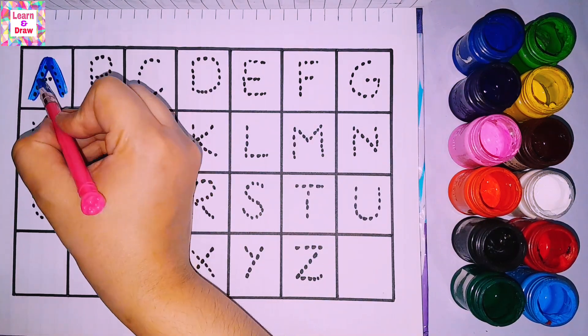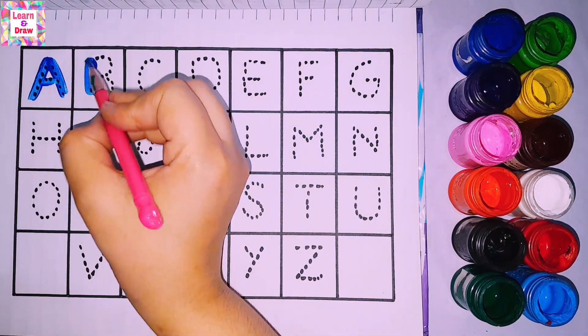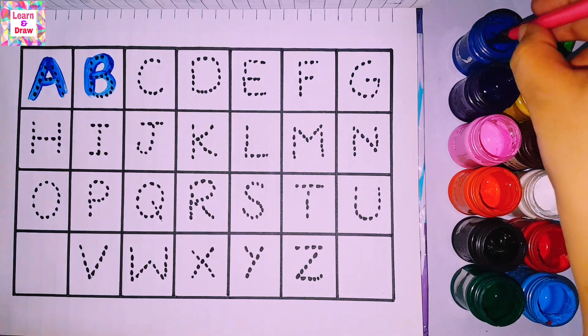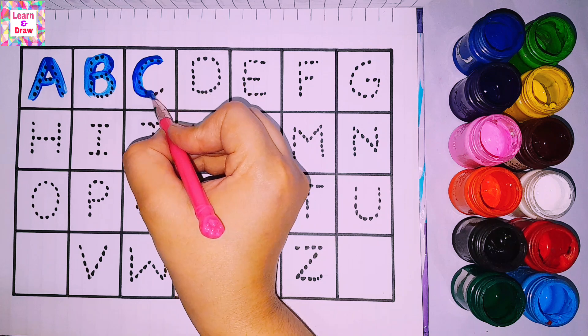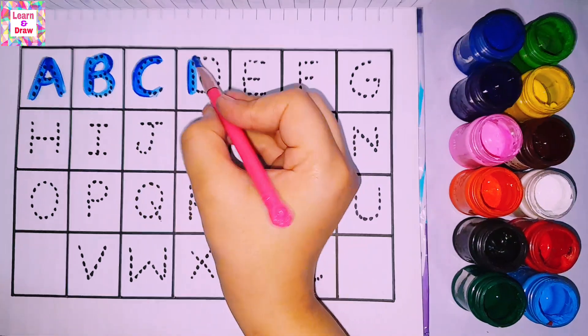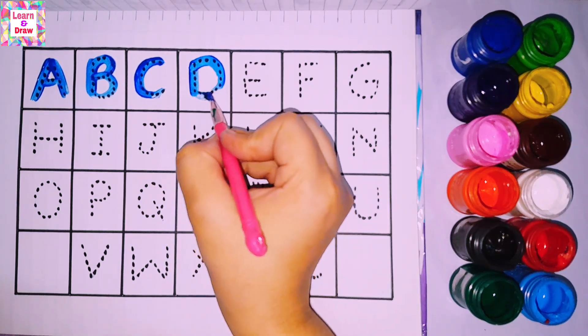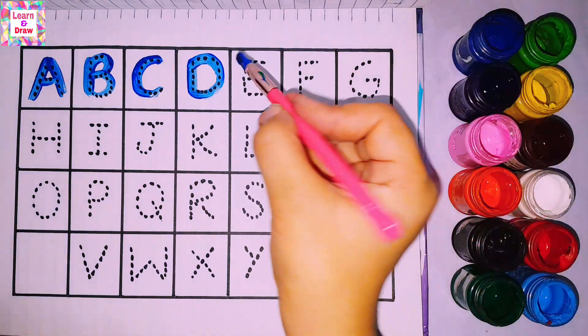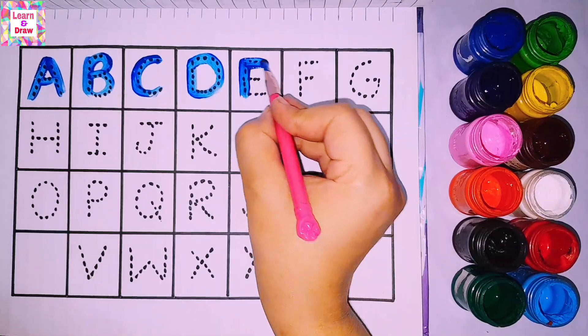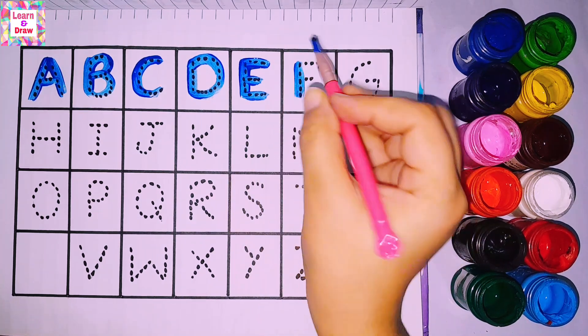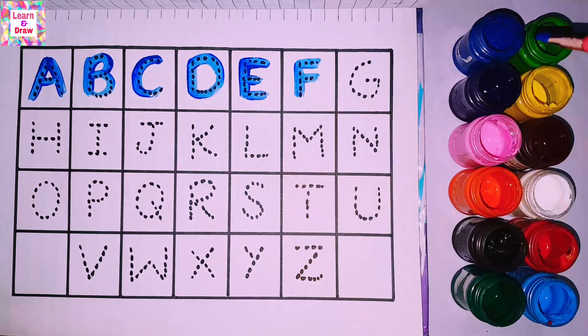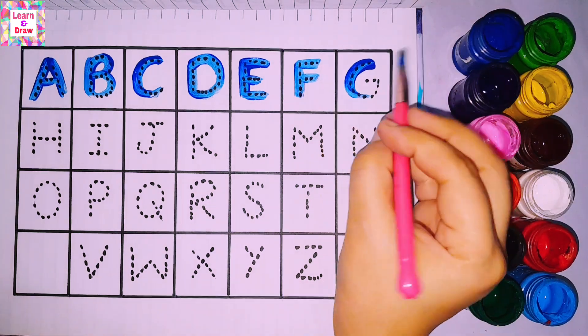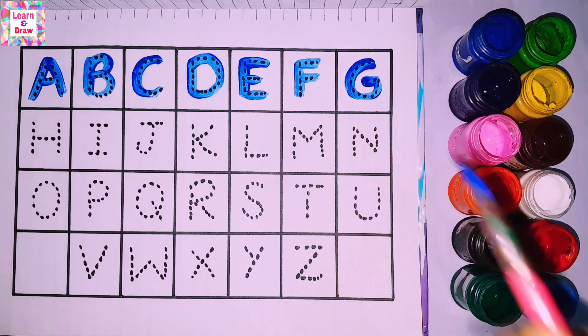A. A for apple. B. B for banana. C. C for cat. D. D for dog. E. E for elephant. F. F for fox. G. G for grapes. Green color.